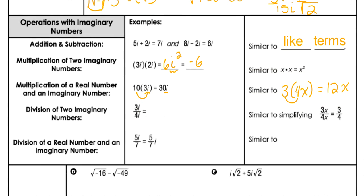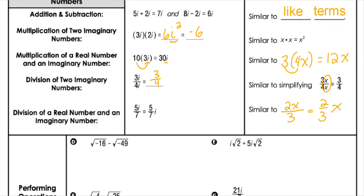Let's look at dividing two imaginary numbers. We can divide anything by itself, so even an imaginary divided by imaginary is just 1. This would reduce to 3 fourths, because when we divide x by itself, it's just 1. And we can divide an imaginary and a real number — you can pull out the real parts, just like we would with 2x over 3. Same idea with imaginaries.